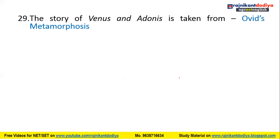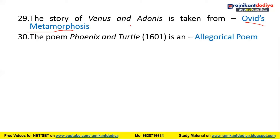The story of Venus and Adonis is taken from Ovid's Metamorphosis, which is the source for Shakespeare's poem. The Phoenix and Turtle is an allegorical poem by Shakespeare published in 1601.